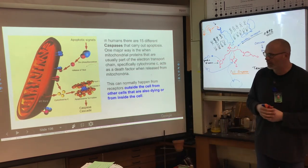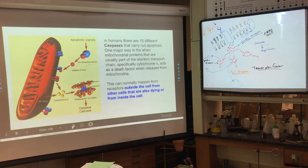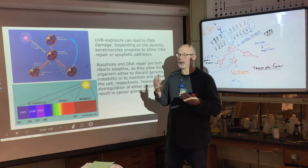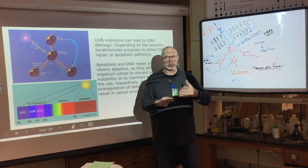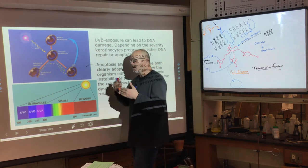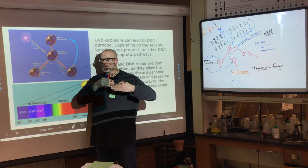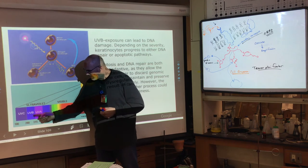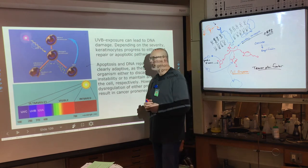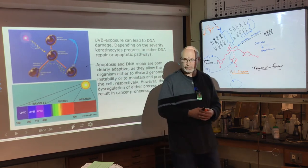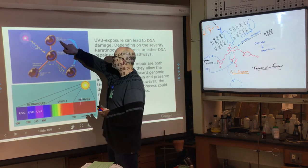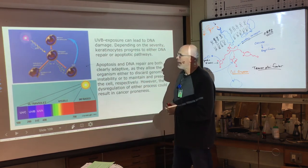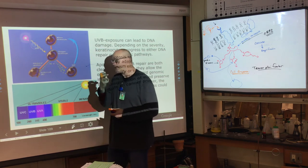There are 15 different caspases in humans that carry out apoptosis. One major trigger is cytochrome c — a mitochondrial electron transport protein — which can diffuse out of the mitochondria and bind with death factors, causing the cell to die. So apoptosis can be triggered either from inside the cell or from outside. Now, UVB is a mutagen — high-energy radiation that can break chemical bonds and H-bonding in DNA. Our body repairs this, but sometimes the repair isn't correct.